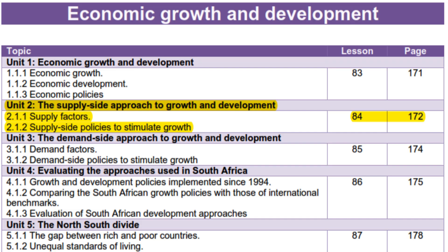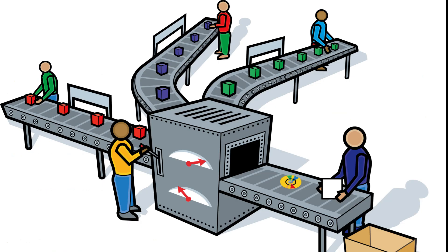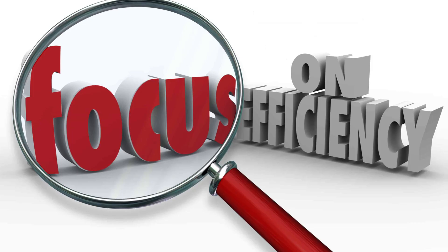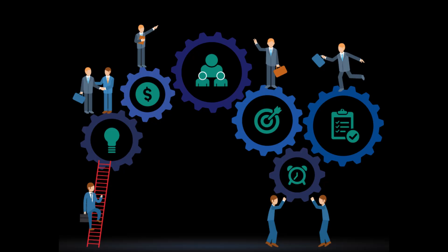What are supply factors? Supply factors are factors that influence the quantity of a good that the producer plans to sell in the market. Supply factors can contribute to economic growth by an increase in resources — such as natural resources, labor, capital, and entrepreneurship — and an increase in efficiency with which such resources are used. The supply-side approach focuses on the expansion in the production capacity of the economy.